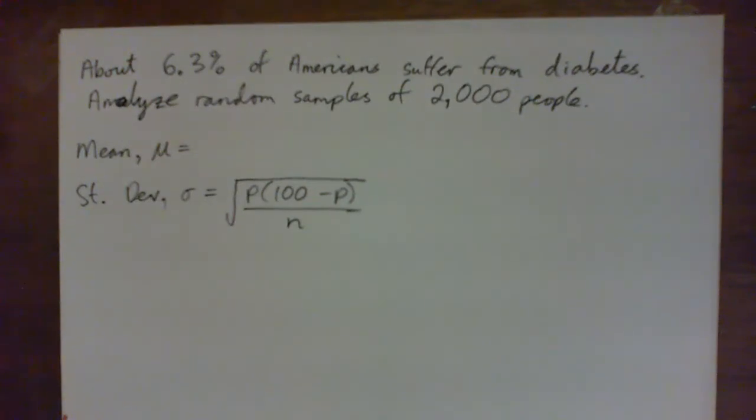All right, so in this video we're going to look at percentage of Americans who suffer from diabetes. About 6.3% of Americans suffer from diabetes and we're going to analyze random samples of 2,000 people.